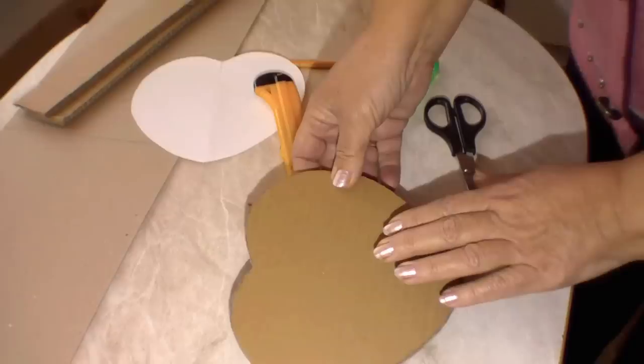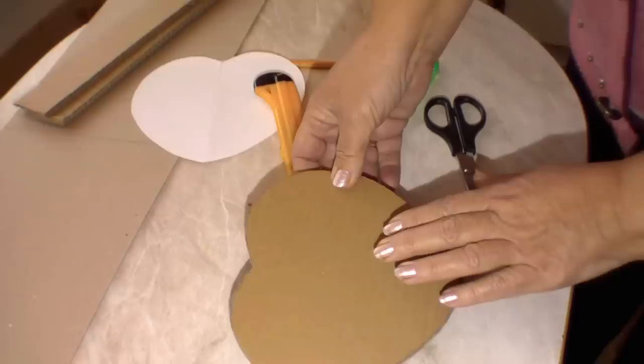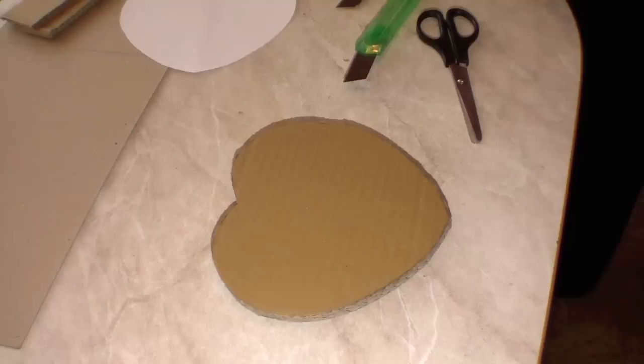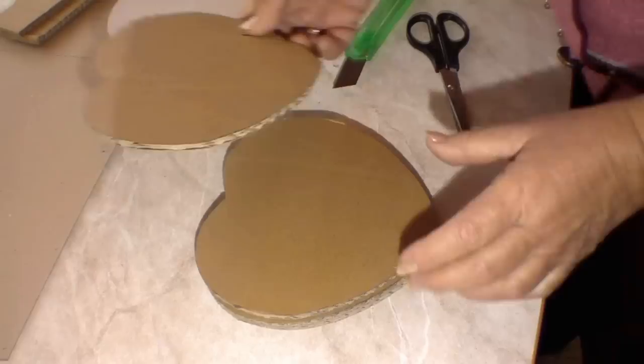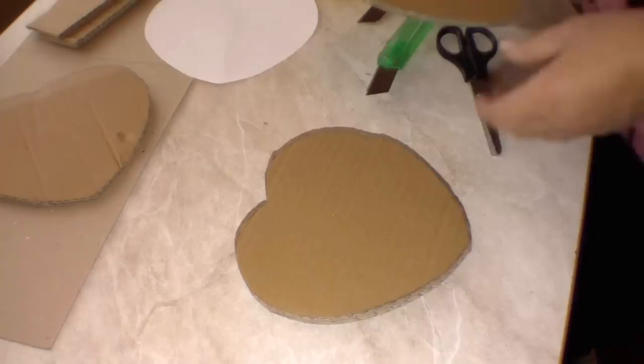So, these two parts of corrugated cardboard will serve us as a bottom. Besides this bottom, I cut two parts more. They all are identical. Why do we need four of them? I will show you in a minute.